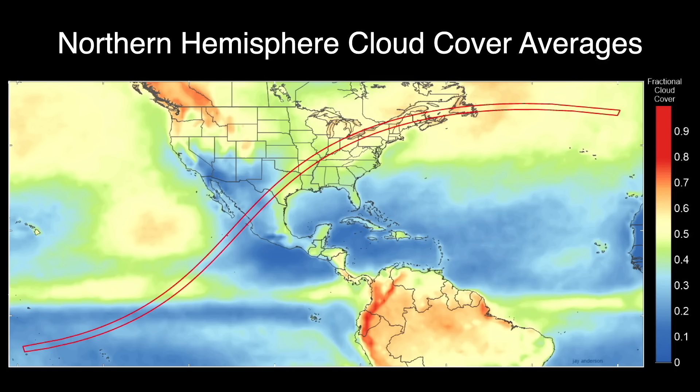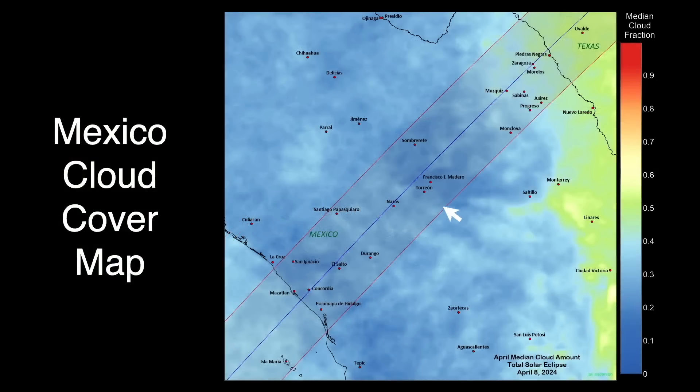We are viewing from here in Torreon, Mexico, and here in Junction, Texas. Let's look closer at each of these locations. You can see here, in Torreon, Mexico, the cloud cover on April 8th is no more than about 20%, giving us very good chances of seeing the total eclipse.